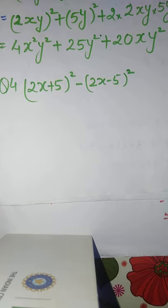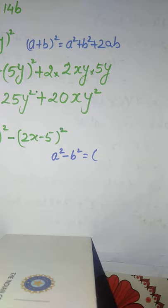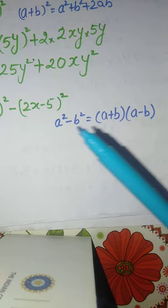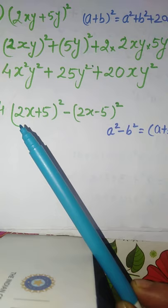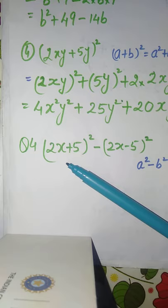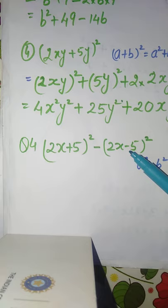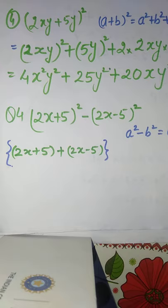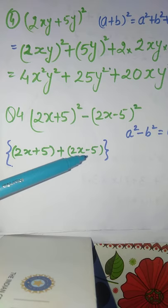The identity a square minus b square equals (a + b) multiplied by (a - b), meaning first term plus second term and first term minus second term. Here a is taken as (2x + 5) and b is taken as (2x - 5). So we first add these two terms and then subtract them.